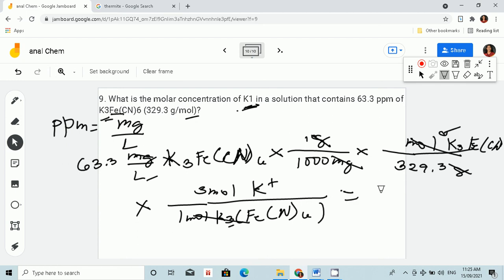We have moles per liter of potassium ion. So simple. Let's multiply and divide. That is 5.77 times 10 to the negative 4 molar K+.